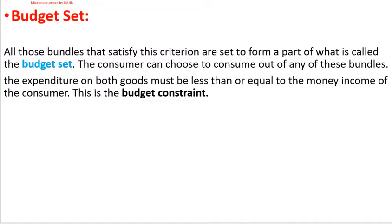Next is the budget set. All those bundles that satisfy the criterion — that is, bundles whose total cost is within the consumer's money income given fixed prices — form the budget set. The consumer can choose to consume any of these bundles. The set of bundles available to the consumer is called the budget set.